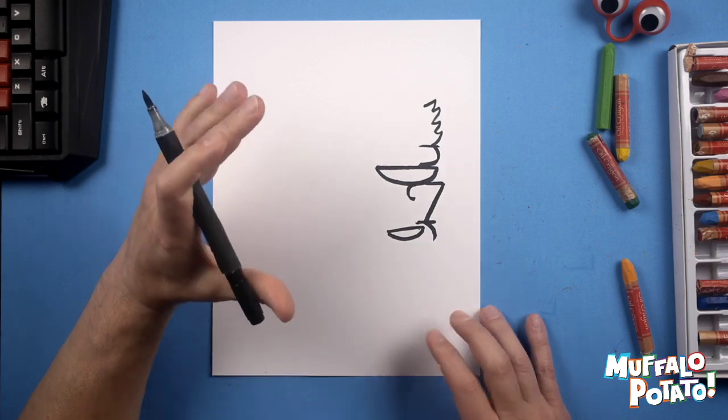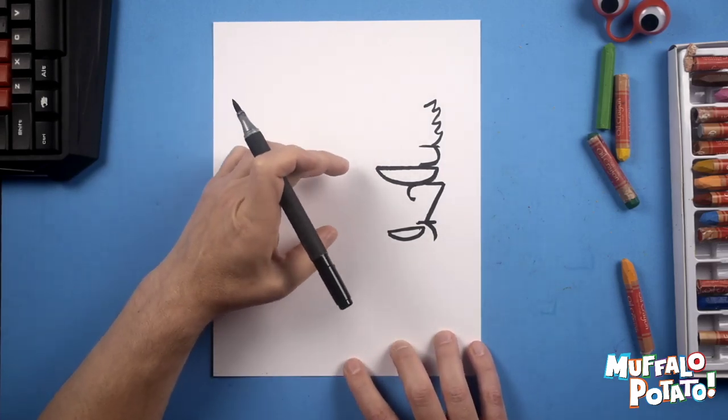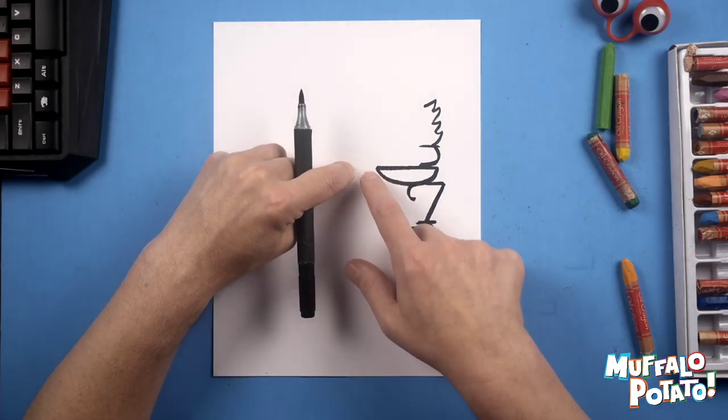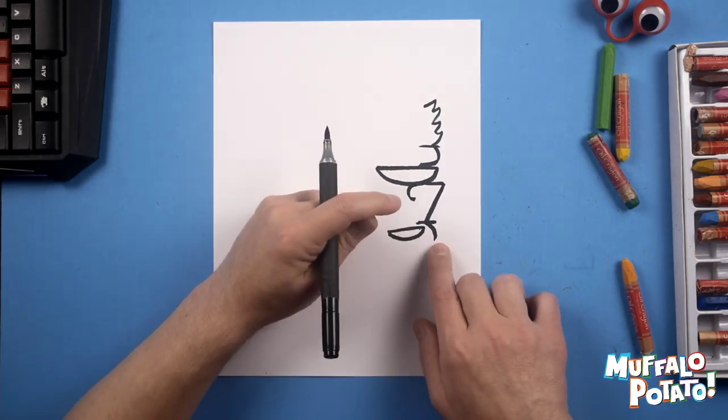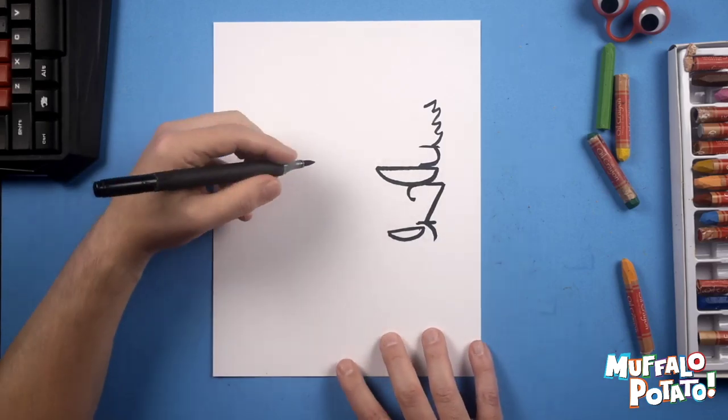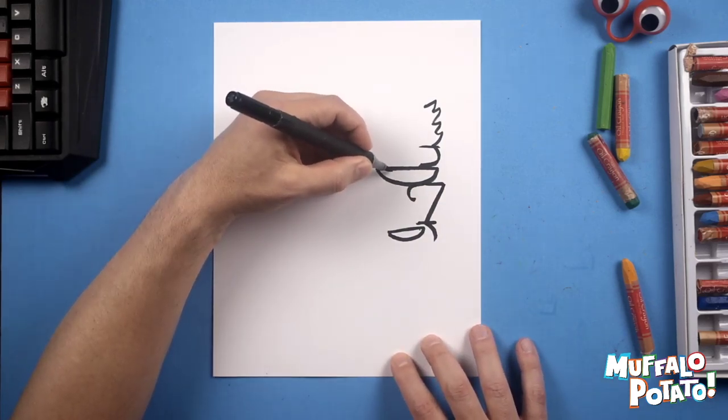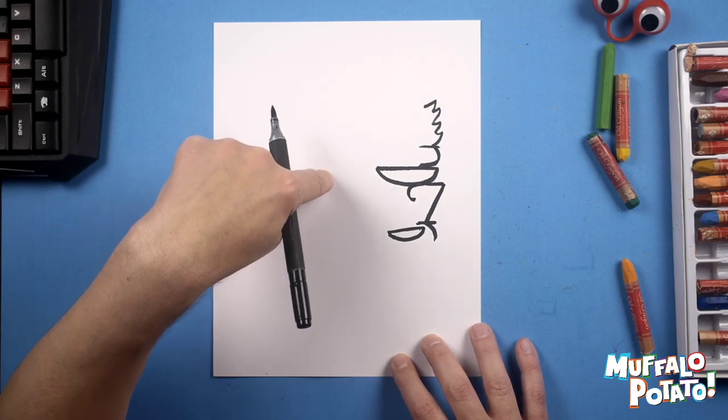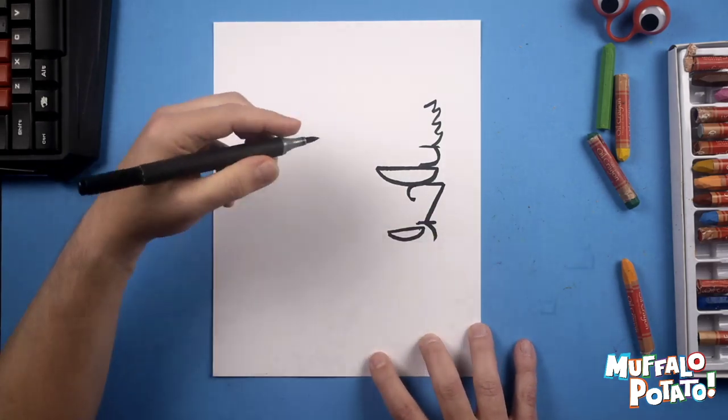Now we're going to do a really big number two. It's going to start right here, sort of in the middle of the page. It's going to come down, down, down. We're not going to go past the top part of that D. We're going to try to get as close as we can to the D, come back around, and then we're going to go straight across and go a little bit past the tip of that R. It's a big number. Don't be nervous. We're just drawing the number two.